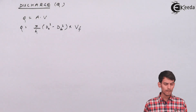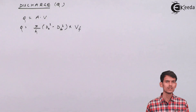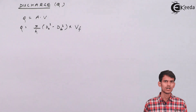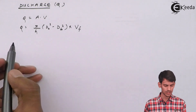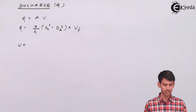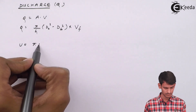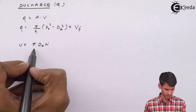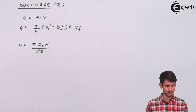You can also get the peripheral velocity of the blade using the formula we've been using throughout the chapter. The formula for peripheral velocity of the blade is u = πDN/60, where D is the outer diameter of the impeller blade.